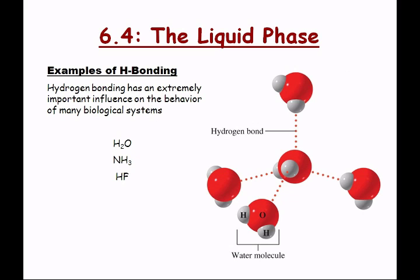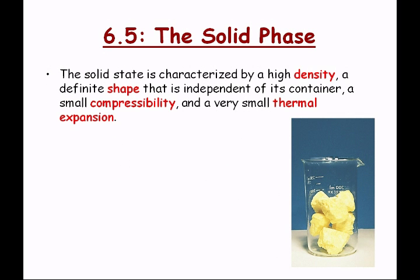Hydrogen bonding has an extremely important influence on the behavior of many biological systems — since every biological system is composed of about 70% water, and water contains these hydrogen bonds. Ammonia is another molecule with hydrogen bonding that you find in biological systems. HF is not found in biological systems, but it's the only hydrogen-bonding molecule that contains fluorine.